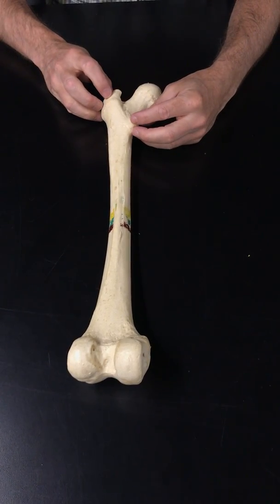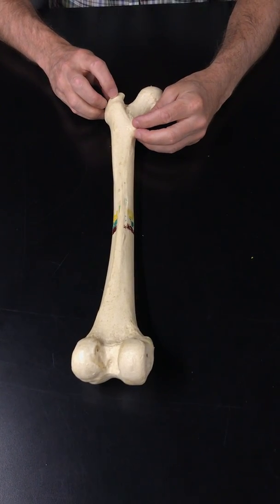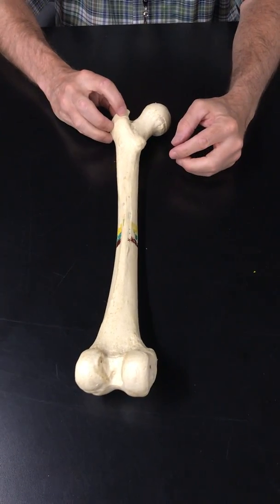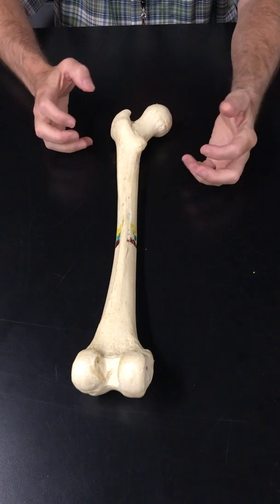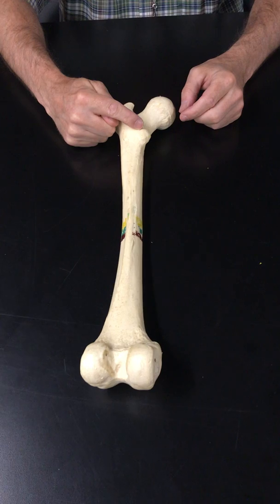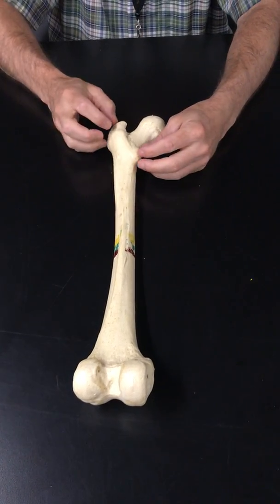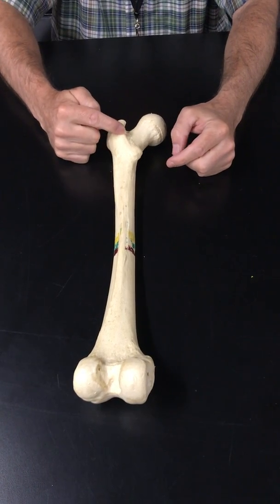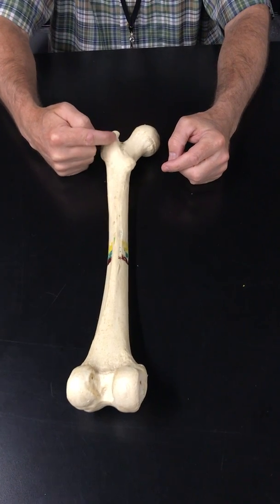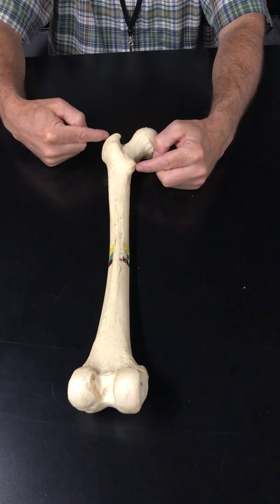On the humerus, we had the greater and lesser tubercle, and there was a little groove in between. On the femur, we have the greater and lesser trochanter. With a ridge of bone in between. So the humerus had two bumps with a depression. The femur has two bumps with a ridge. This is the intertrochanteric ridge, connecting the tip. And again, these are points for muscle attachment.